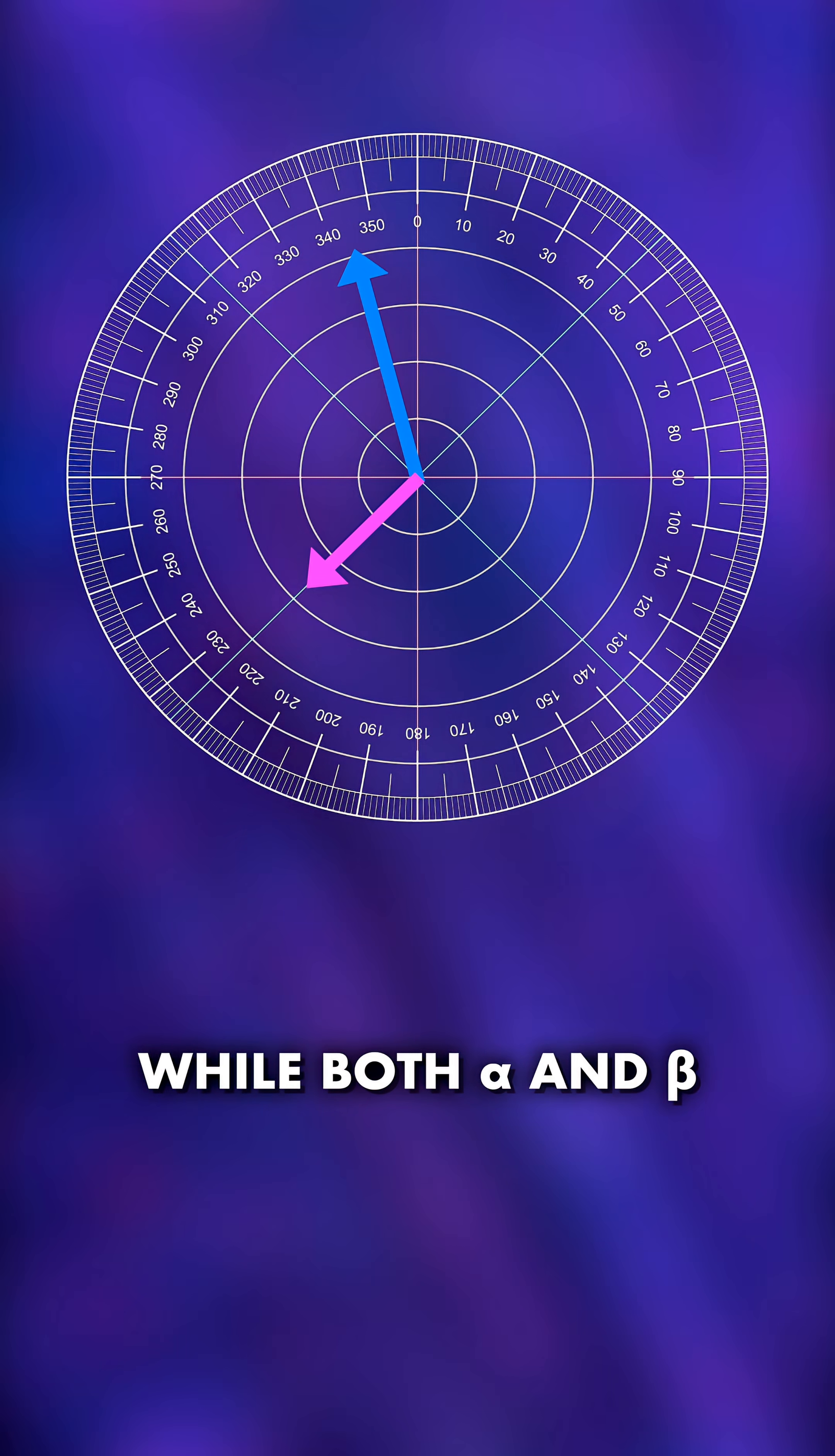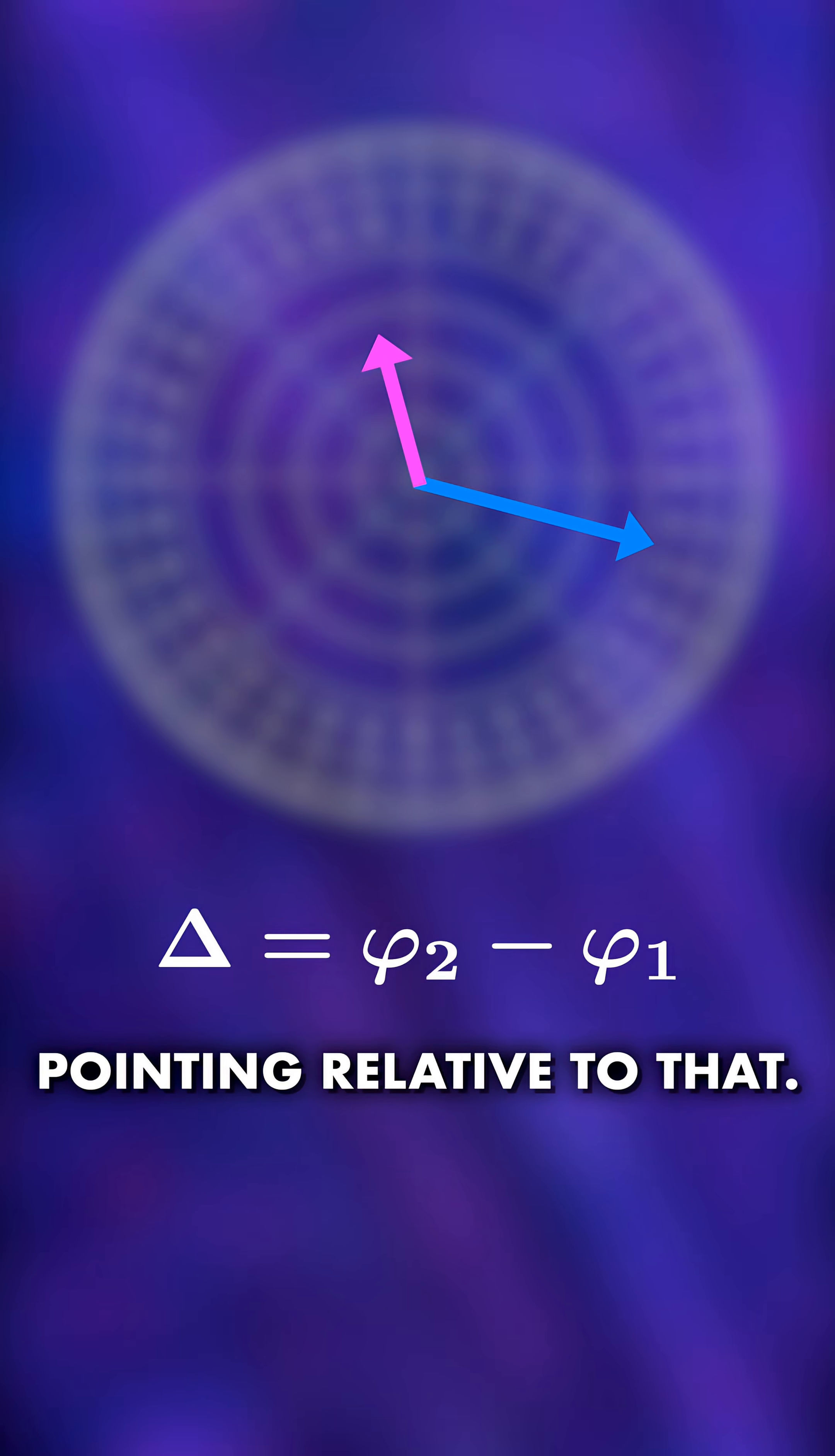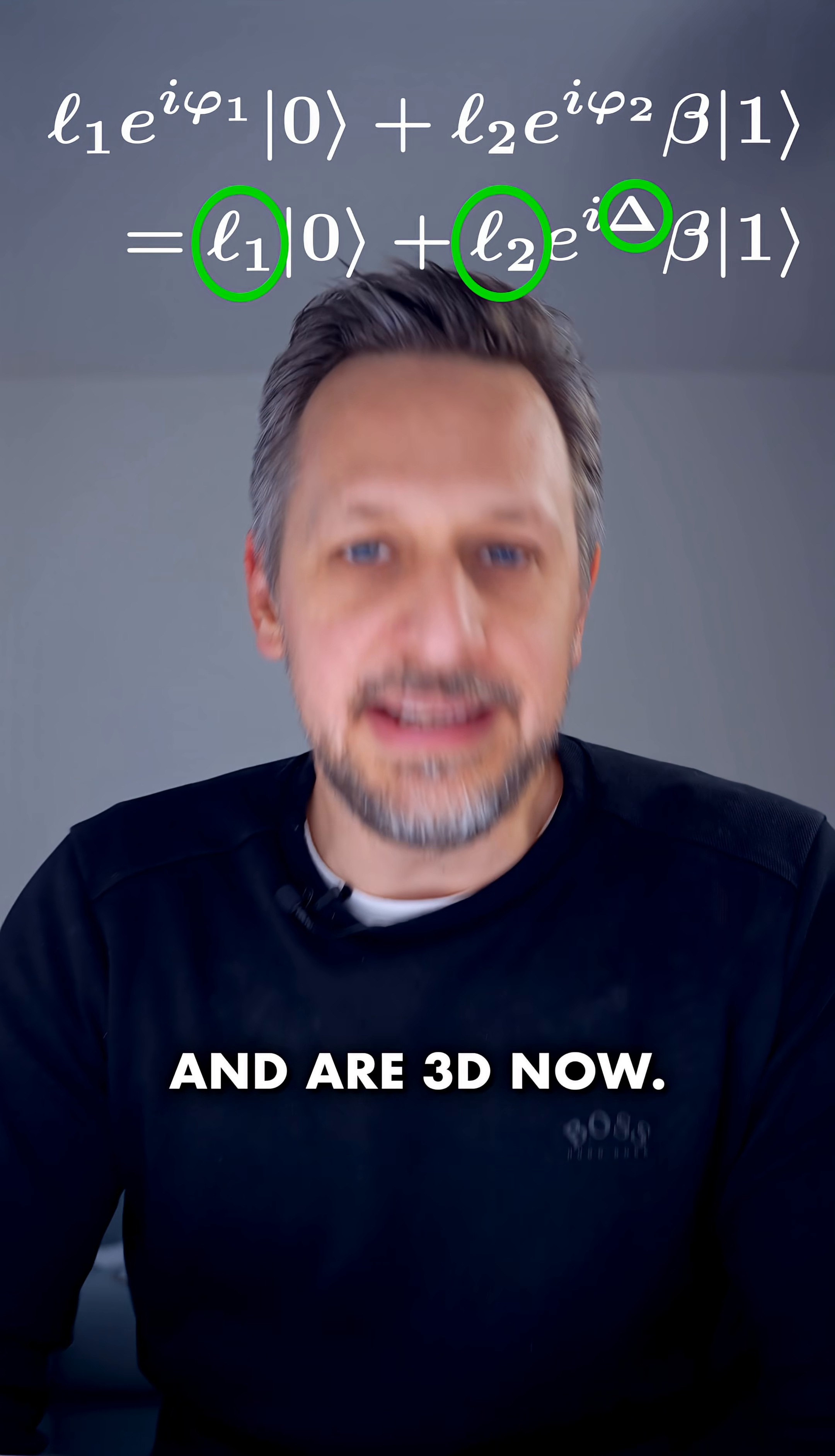While both alpha and beta have an angle, it turns out the only thing that matters is the relative angle. This means wherever alpha is pointing, it only matters where beta is pointing relative to that. In quantum physics, we say the global phase is irrelevant. Only the relative phase matters. And with this, we have eliminated one number and are 3D now.